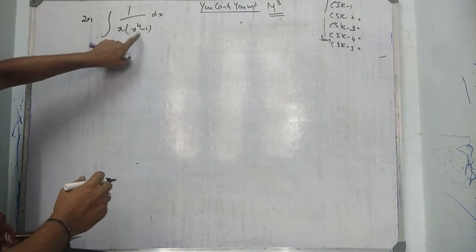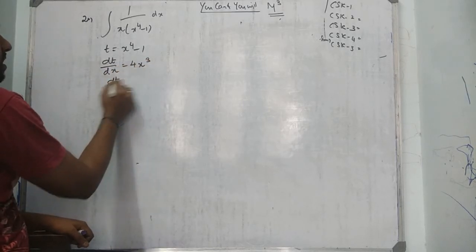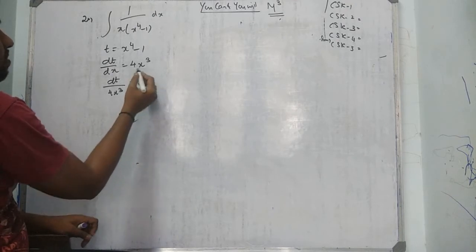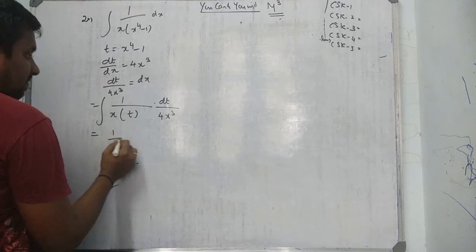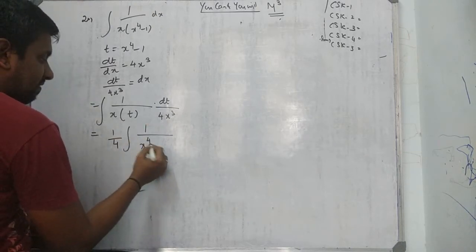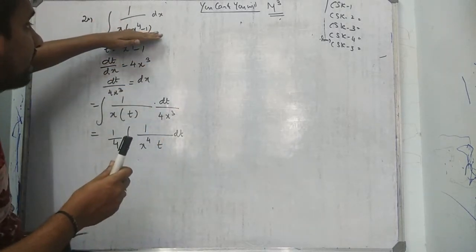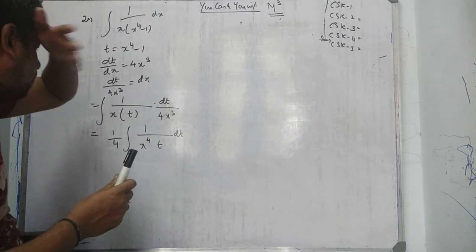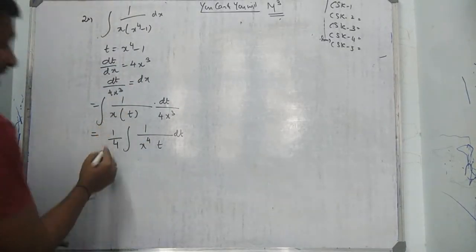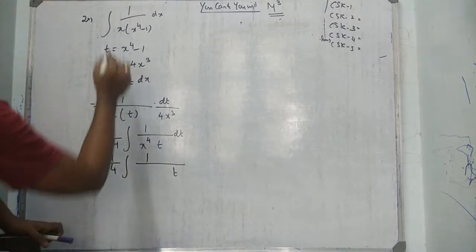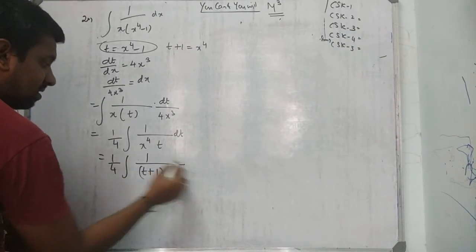For this sum, let t equal to x⁴ minus 1, then dt/dx equals 4x³, so dt/(4x³) equals dx. The new question becomes 1 over (x times t) times dt/(4x³) — that's 1/4 times 1 over x⁴ times T. Now substitute x⁴ equals t + 1. T comes from inside the bracket. So we get 1/4 times 1 over T(T + 1) — this is CSK2.